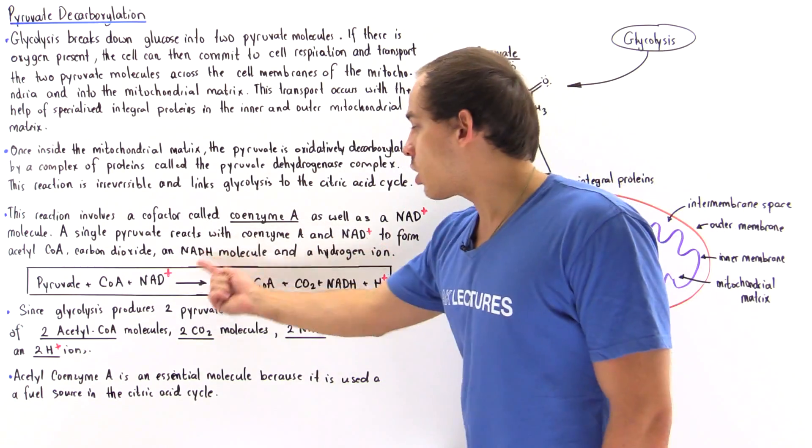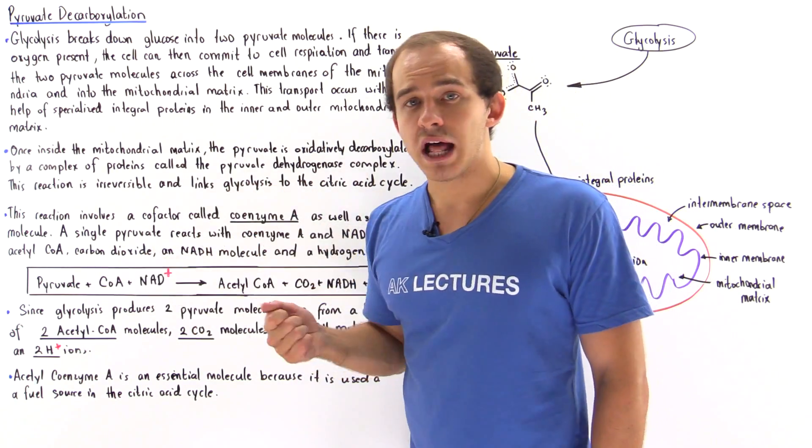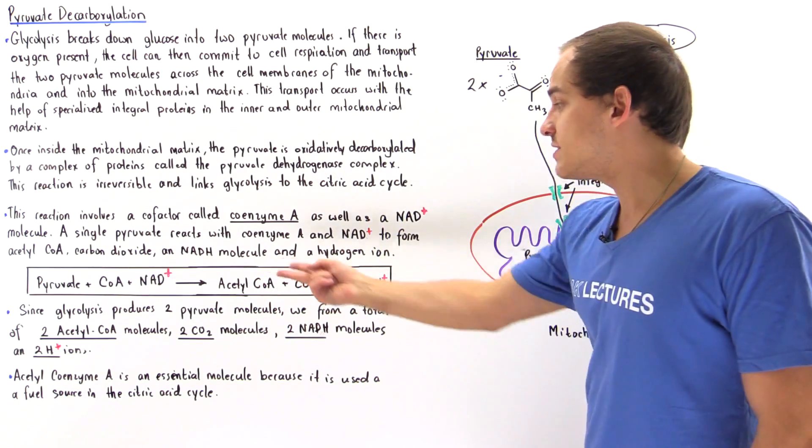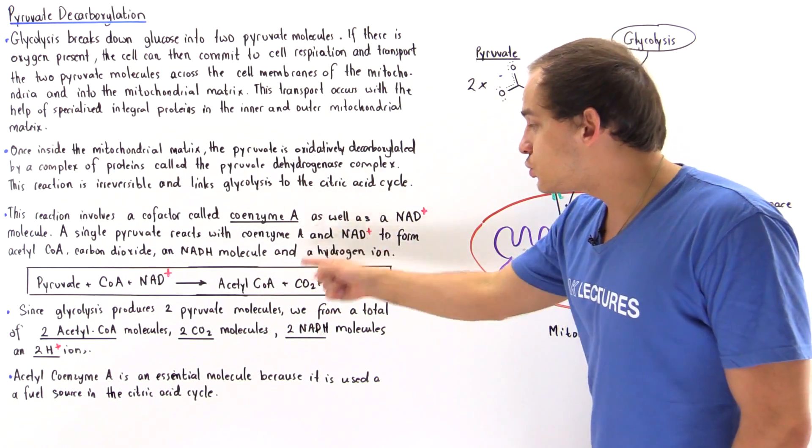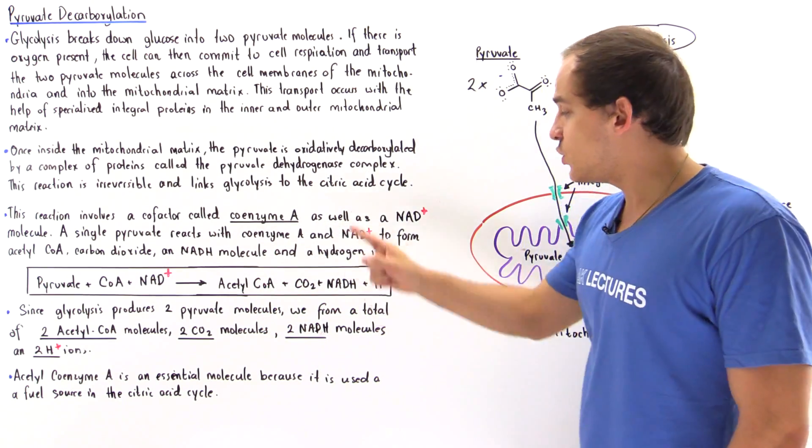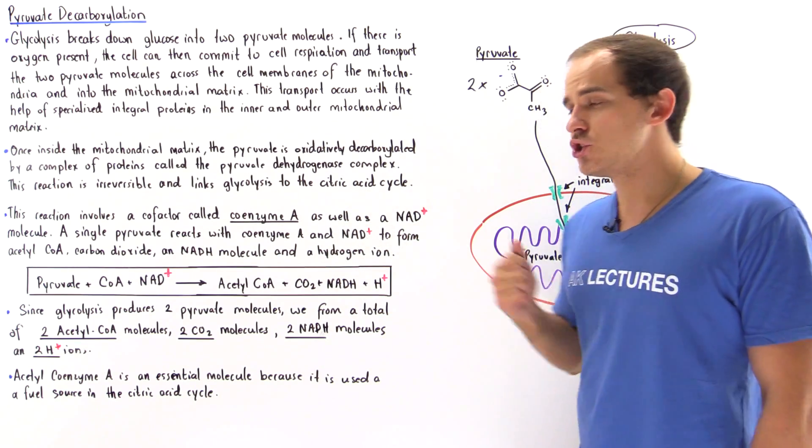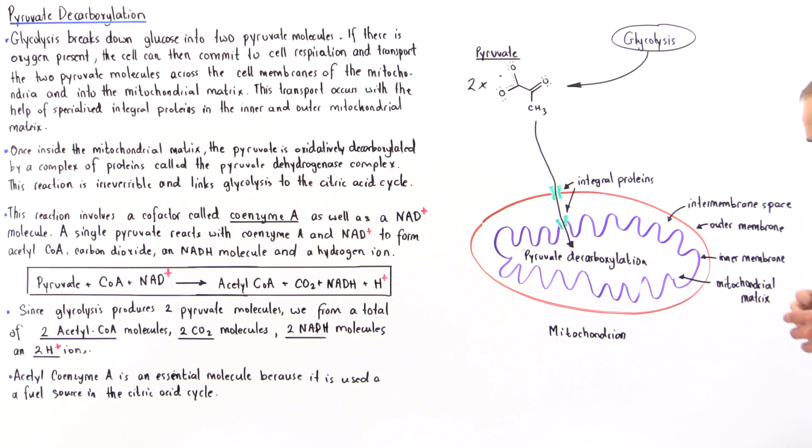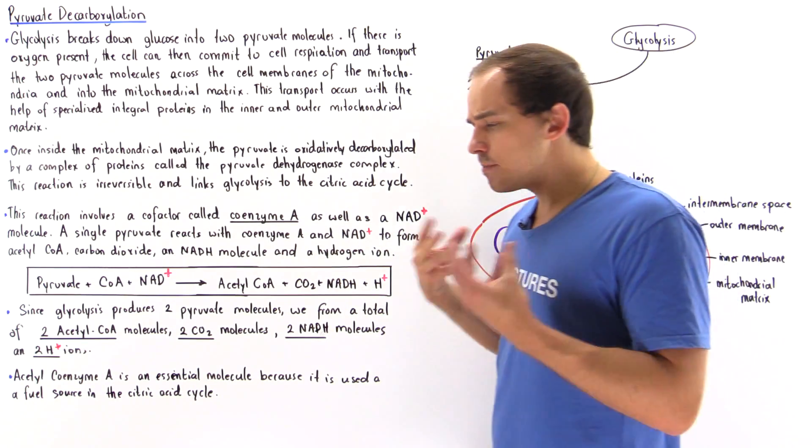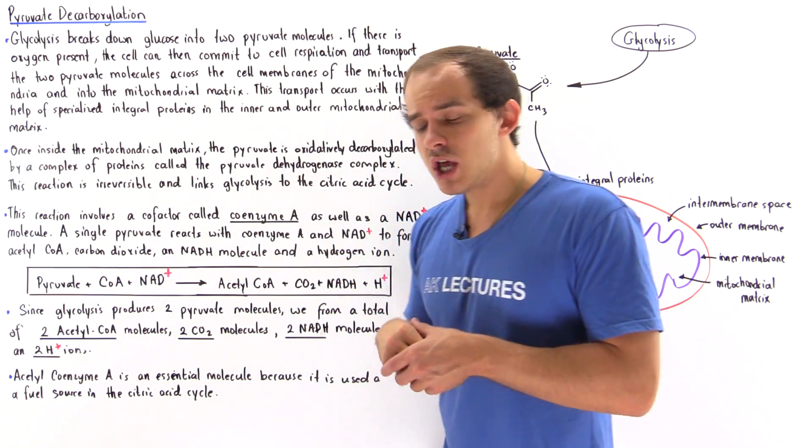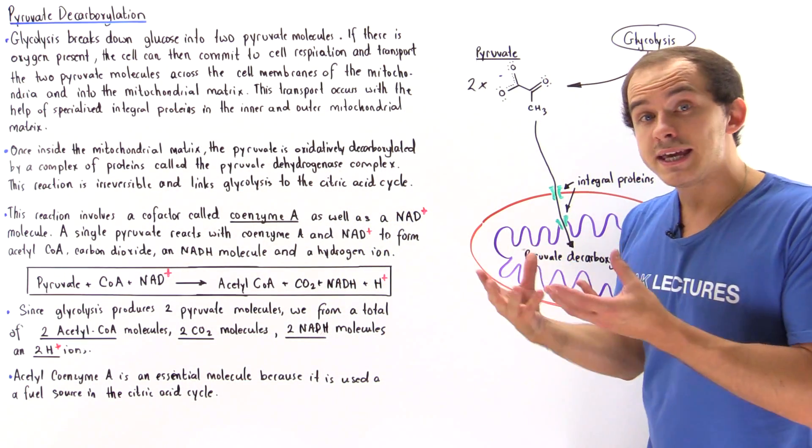The products are these products multiplied by two: we have two acetyl coenzyme A molecules, two CO2 molecules, two NADHs, and two H+ ions.